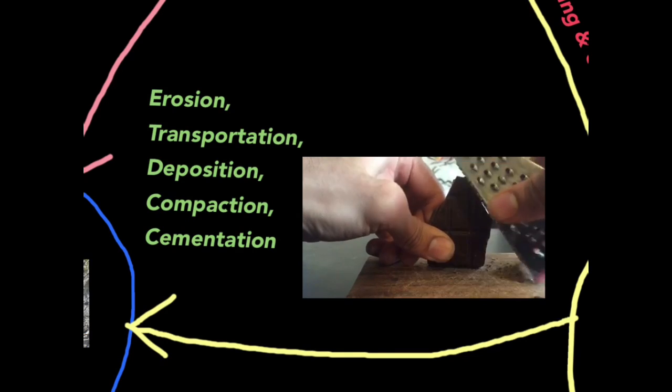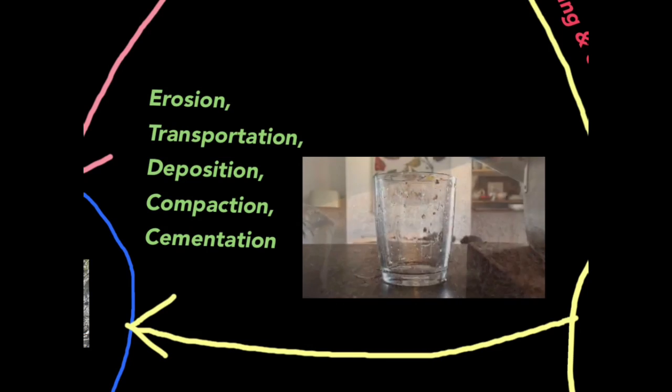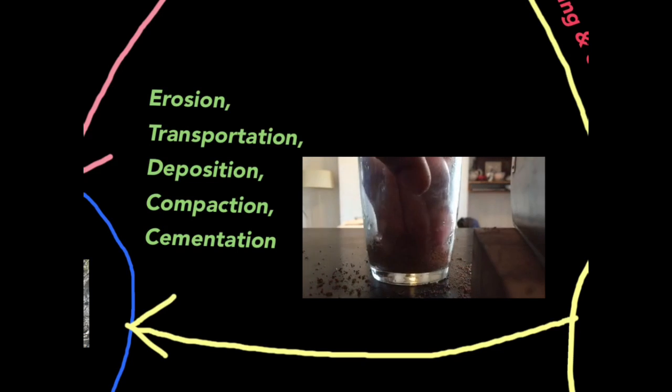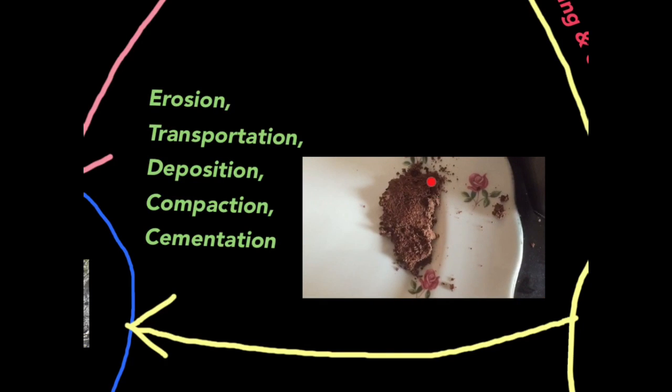Here I'm grating chocolate. This is the weathering and erosion to create sediment. Then the sediment is transported in water to the seabed where more sediment is deposited creating pressure. Then I'm pressing it down to speed up the process and there you can see a crumbly layer of porous rock, nowhere near as dense as igneous rock due to all the small air gaps.